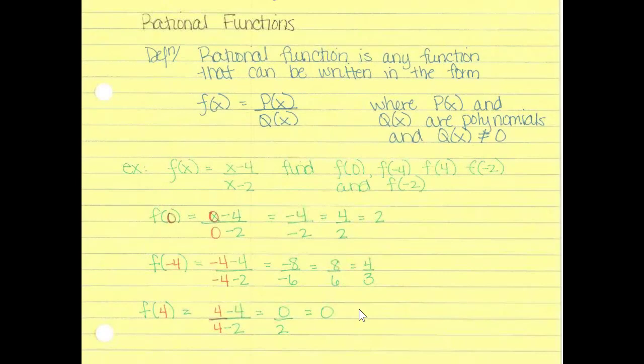A rational function is any function that can be written as f of x equals p of x over q of x, where p of x and q of x are polynomials and q of x is not zero. For example, f of x equals x minus 4 over x minus 2 is a rational function. Let's find f of 0, f of negative 4, f of 4, f of negative 2, and f of 2.